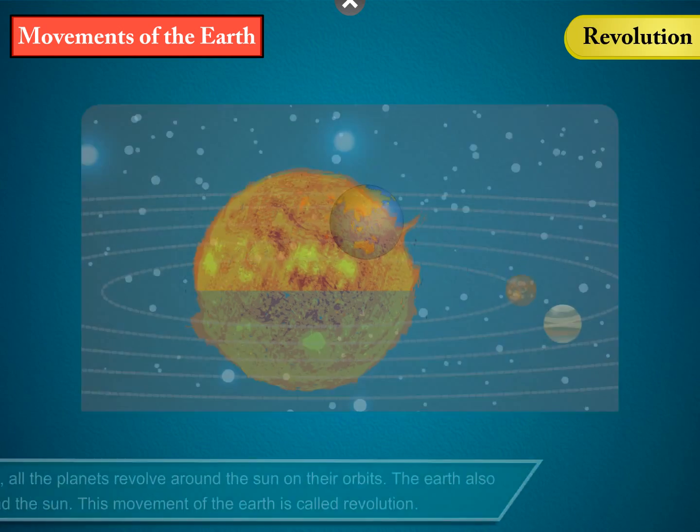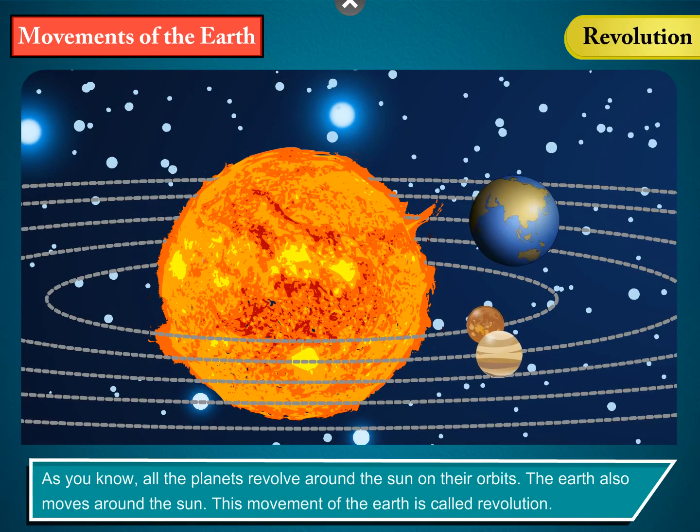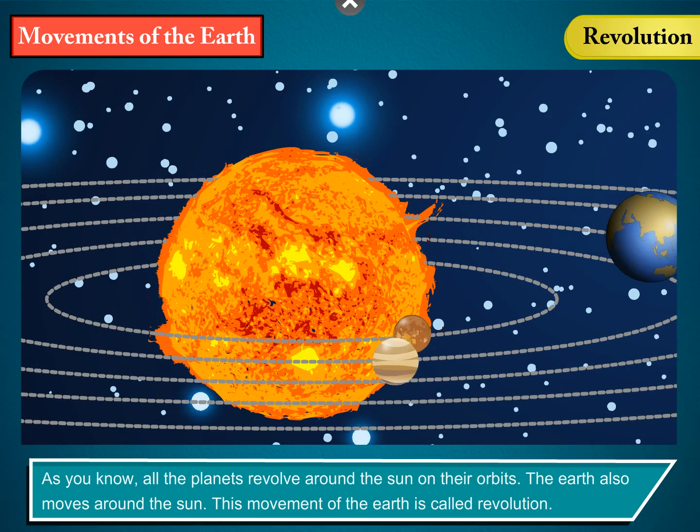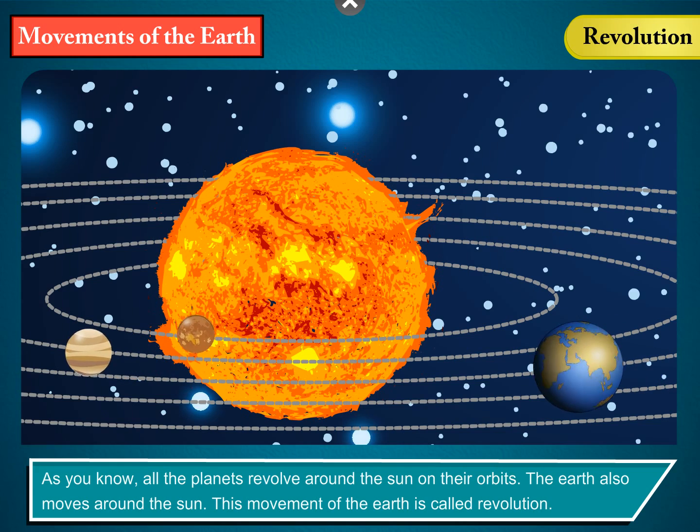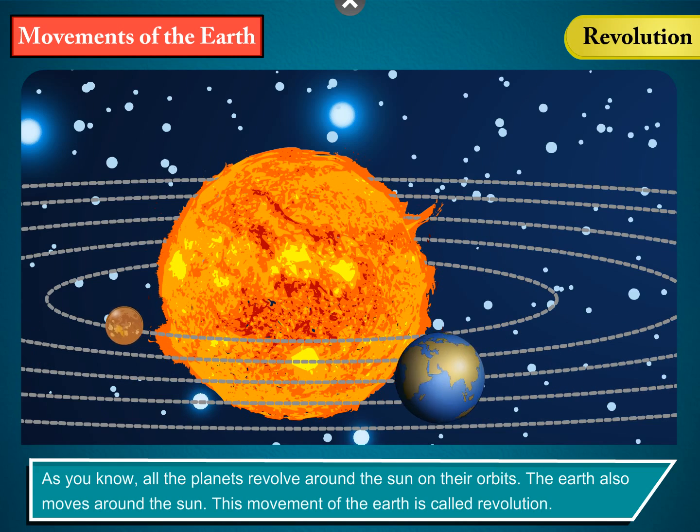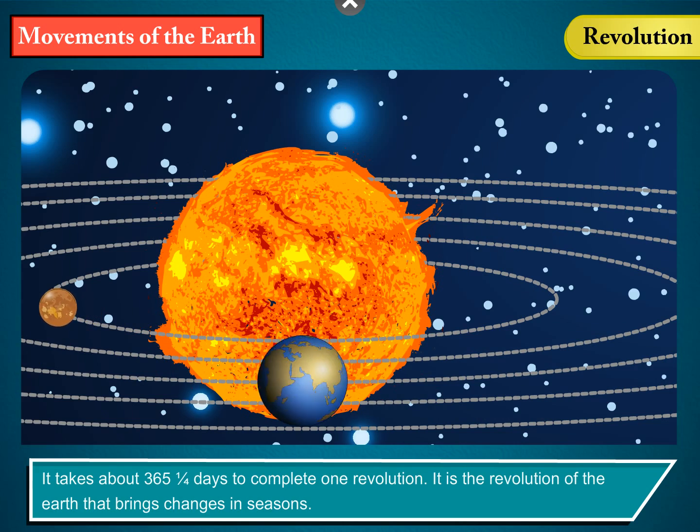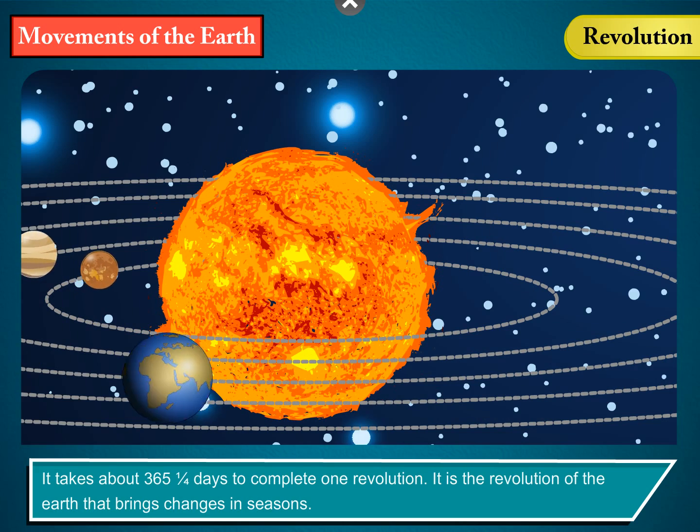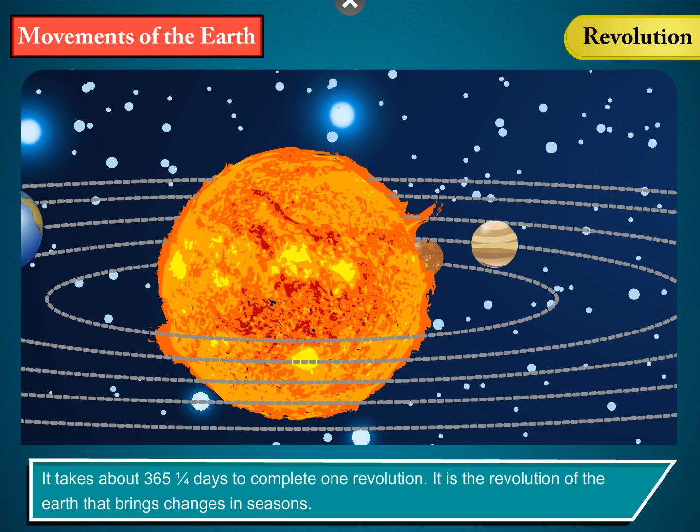Revolution: As you know, all the planets revolve around the sun on their orbits. The Earth also moves around the sun. This movement of the Earth is called revolution. It takes about 365 and a quarter days to complete one revolution. It is the revolution of the Earth that brings changes in seasons.